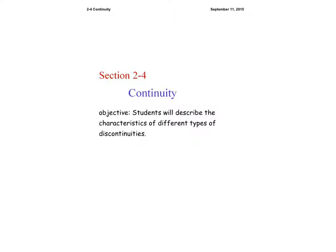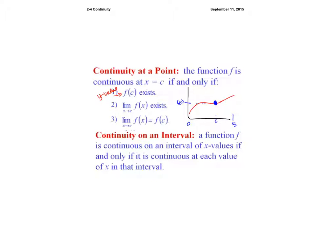You will be learning what continuity means and different types of discontinuity. At a college level, you discuss continuity with three requirements. The function F is continuous at C if and only if: the function exists at C, the limit exists at C, and the limit equals the function at C. All three requirements must be met to prove that the function is continuous.